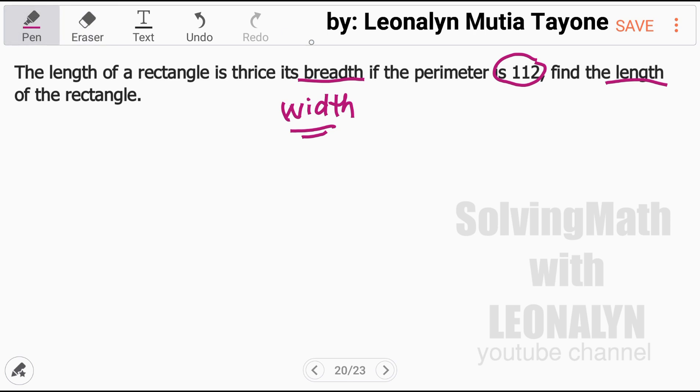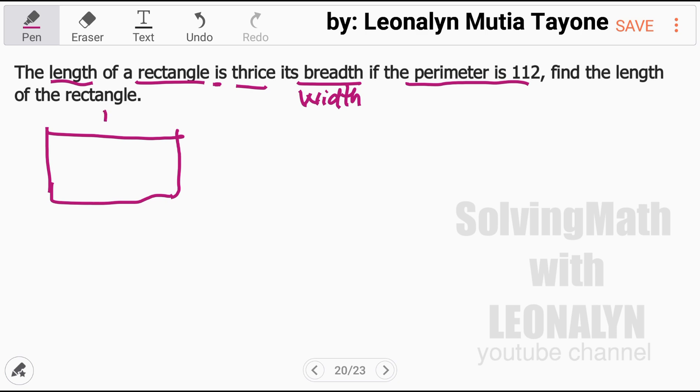Let's go back to the question. So again, this means width, the measurement from side to side. So, the length of a rectangle is thrice its breadth or width. If the perimeter is 112, let's draw the rectangle to make it clear.